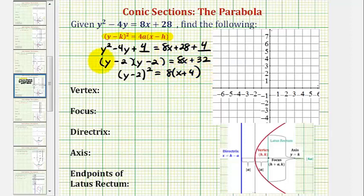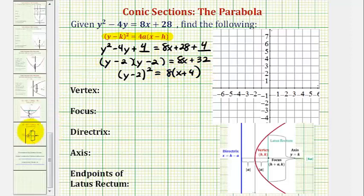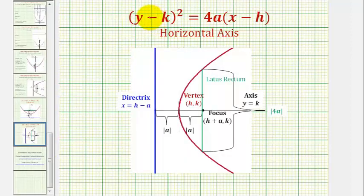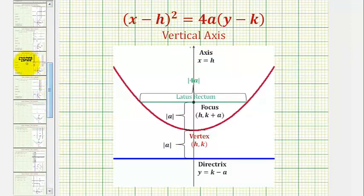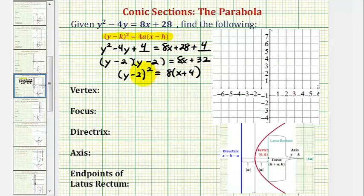We should recognize this form. Because the y part is squared, the parabola will have a horizontal axis, meaning it will open left or right based upon the sign of a. If the x part were squared instead, we'd have a vertical axis. For the next step, let's determine the sign of a.